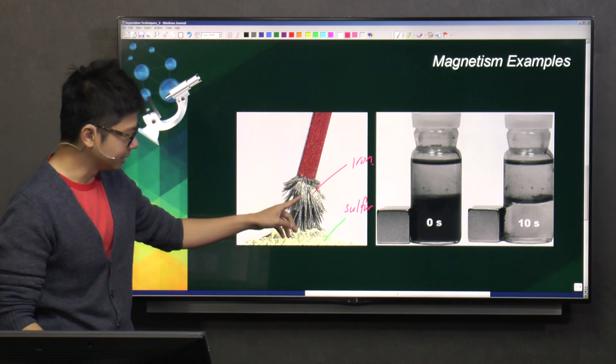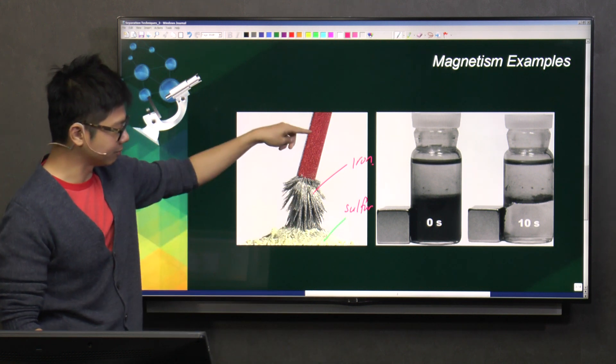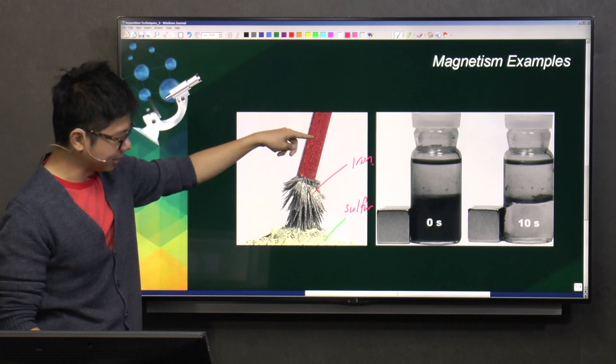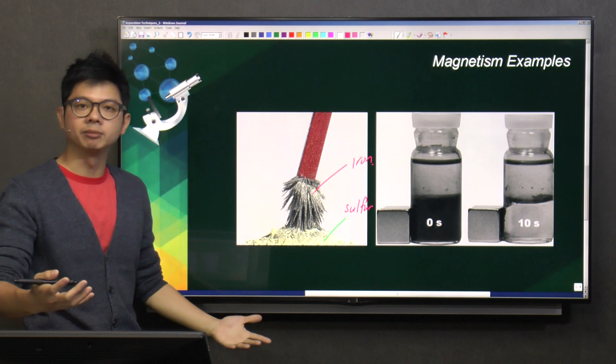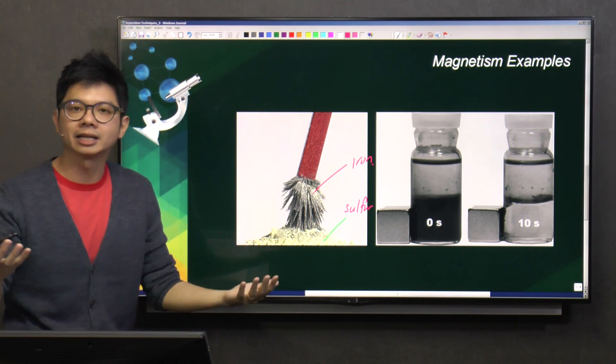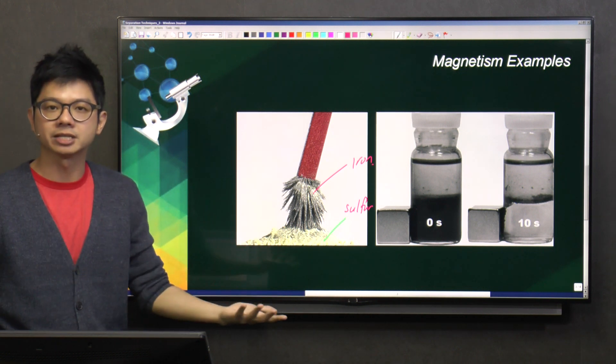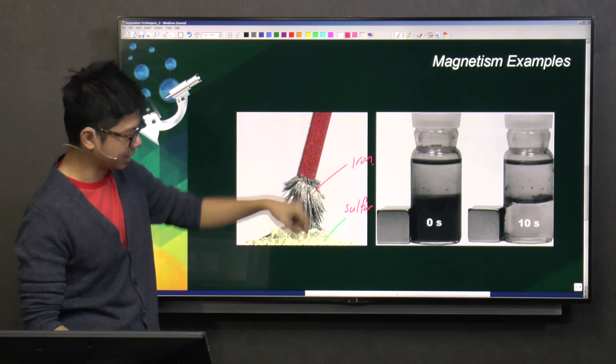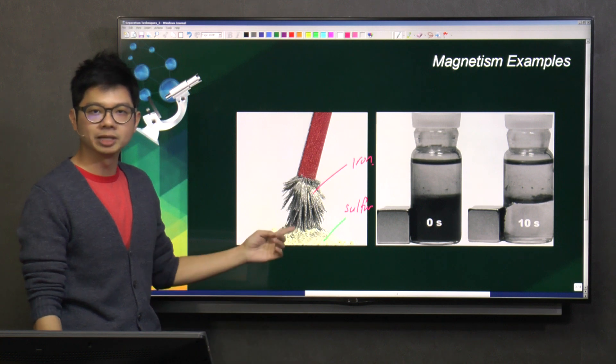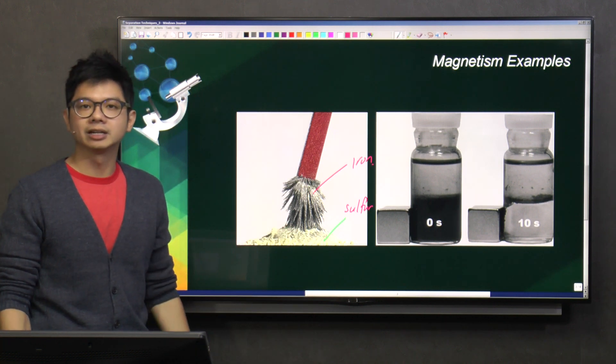Because iron is actually magnetic, I just need to take a magnet. This magnet will attract the iron. Does it attract the sulfur? No, right? Because sulfur is not a magnetic object or magnetic material. So, very simple. Just put the magnet here, it will attract all the iron filings. Then you will be left with the sulfur powder.